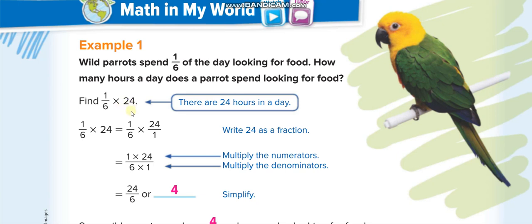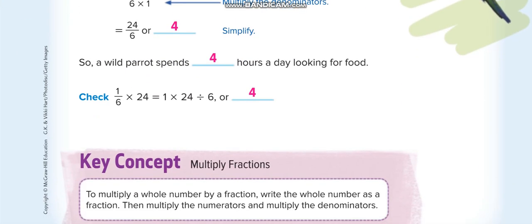But the other way, no need to do that. Directly just multiply the whole number with the numerator only and keep the denominator the same. 24 times 1 is 24, over 6. And then simplify it. How many 6 you can take out of 24? 4, and no remainder. Or if you divide, 24 divided by 6 equals 4.